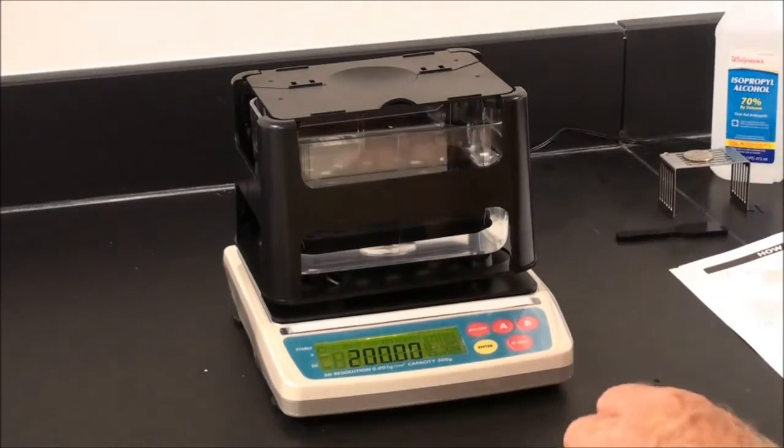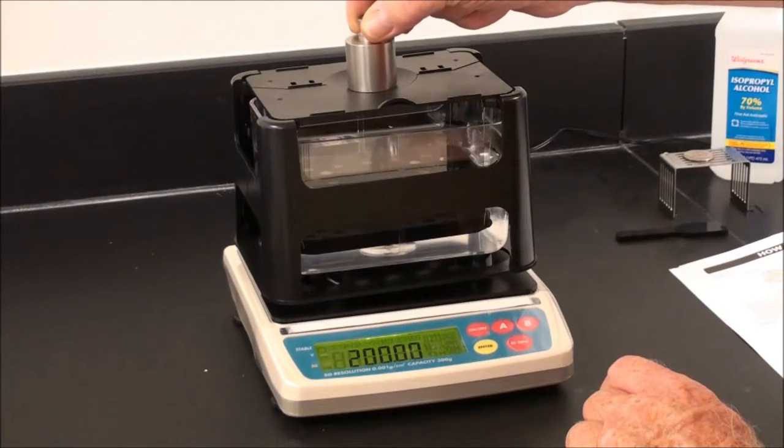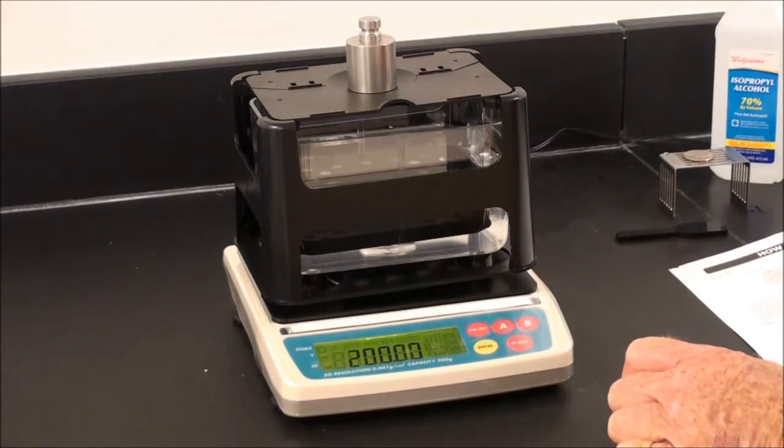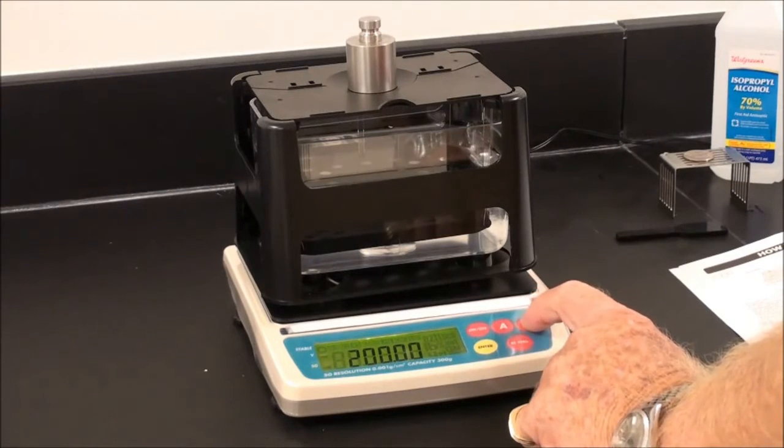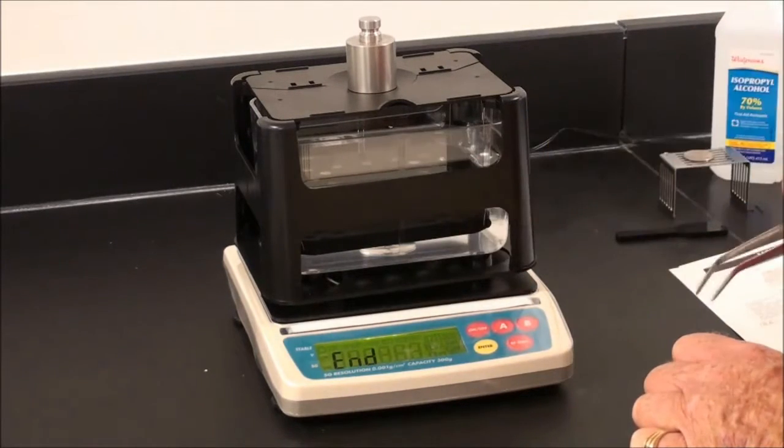Take the 200 gram weight as shown in the display, place very gently on the aerial sensor. Now press the B key, the stability mark appears, then end will be displayed.